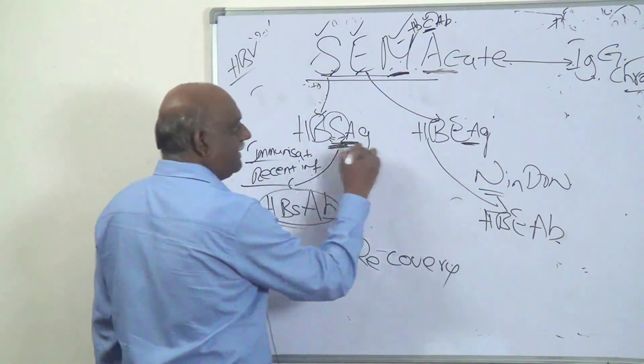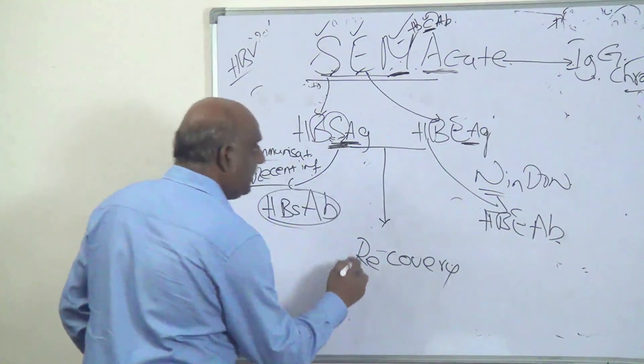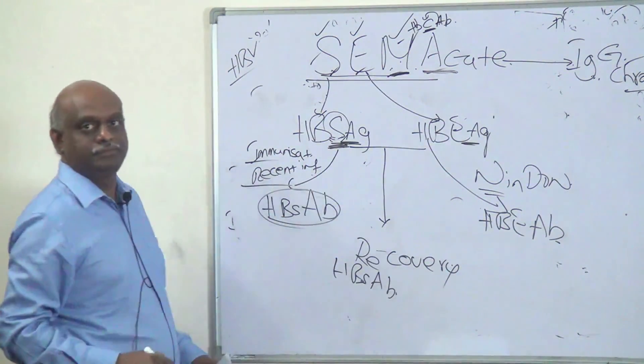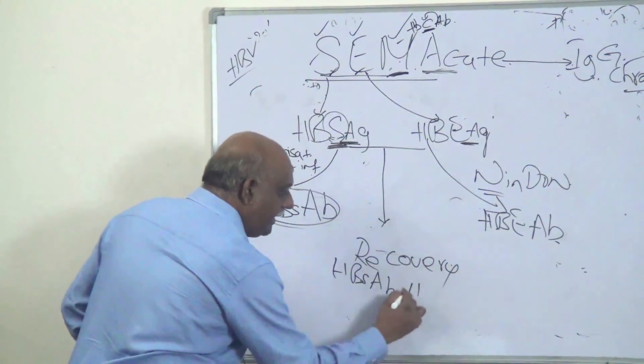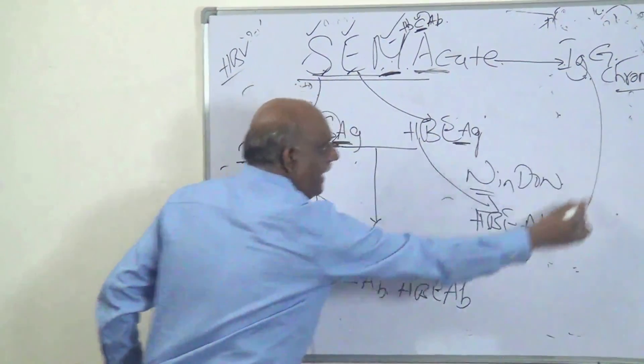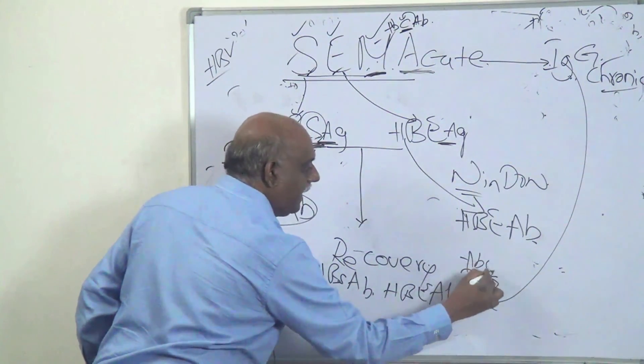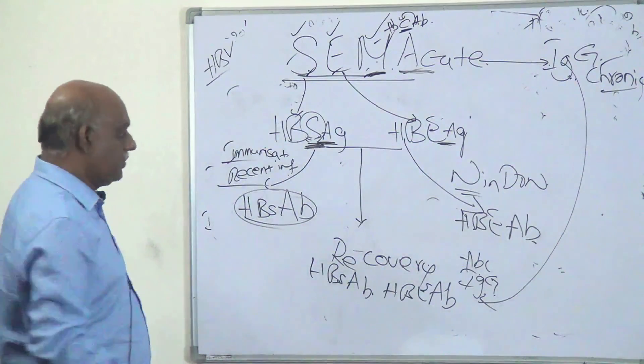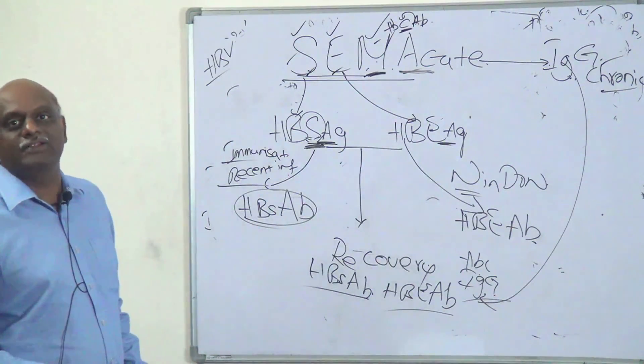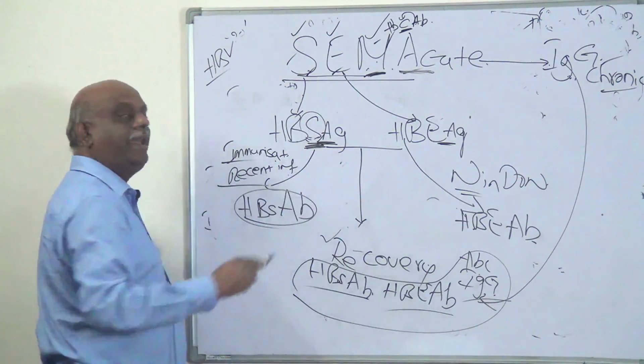Then, recently, so you get HBsAb antibody, and HBeAb antibody, and here, IgG, IgG, or against the core antigen. So, this combination of surface antibody, envelope antibody, IgG type of an antibody, again is the core antigen, a sub-combination jehan rehtha hai, isko kehte hai, recovery.